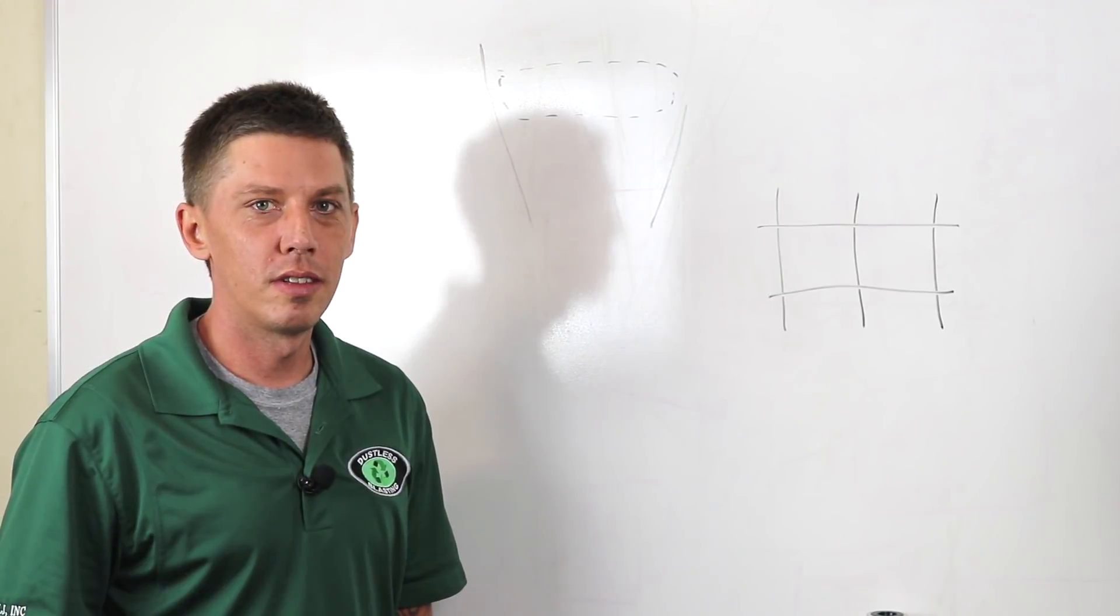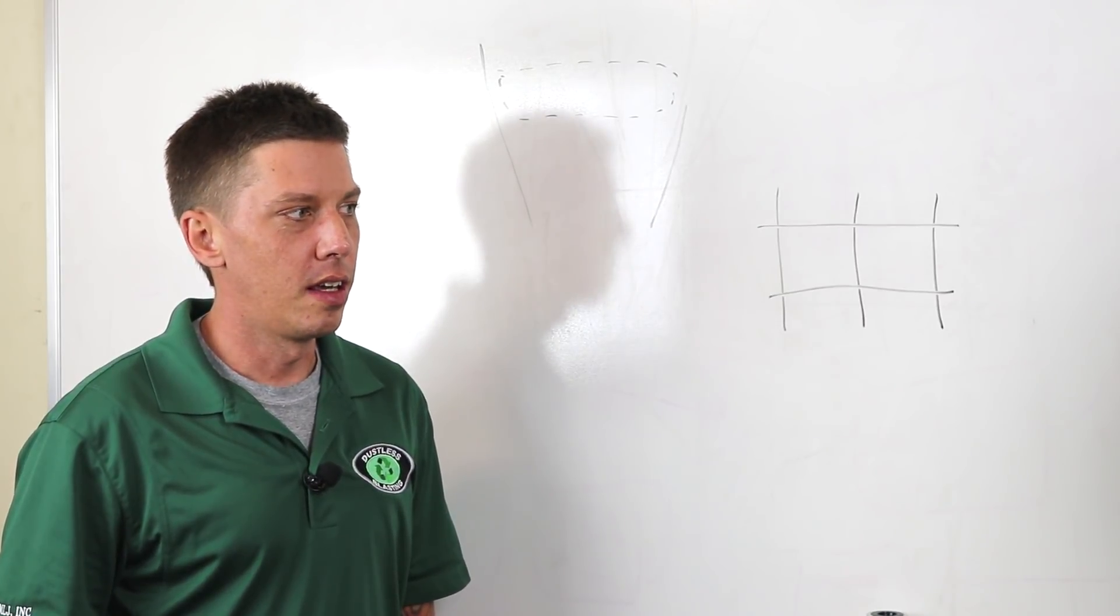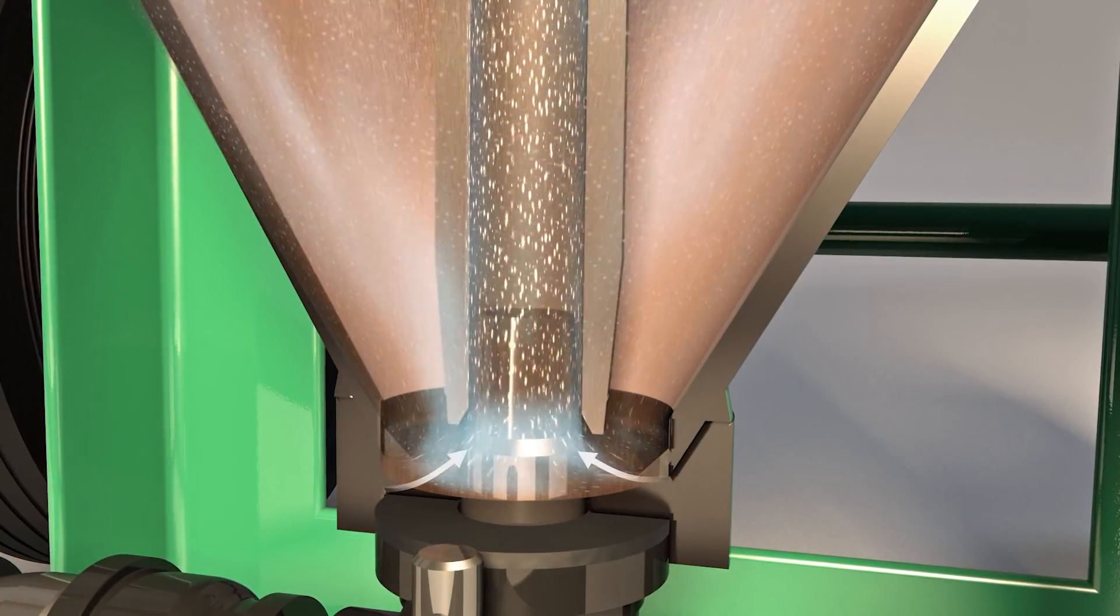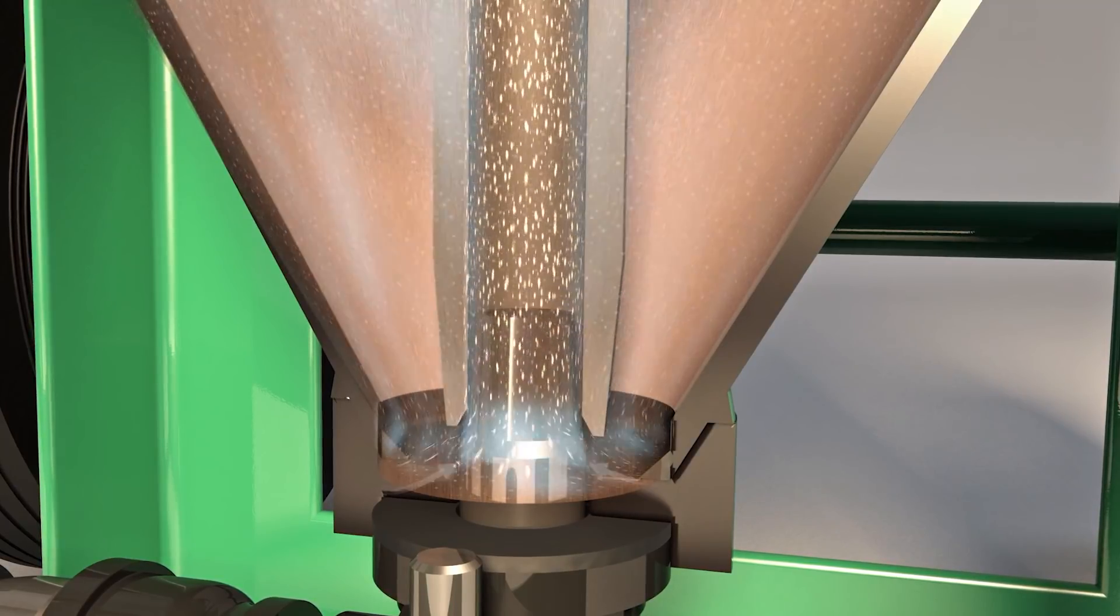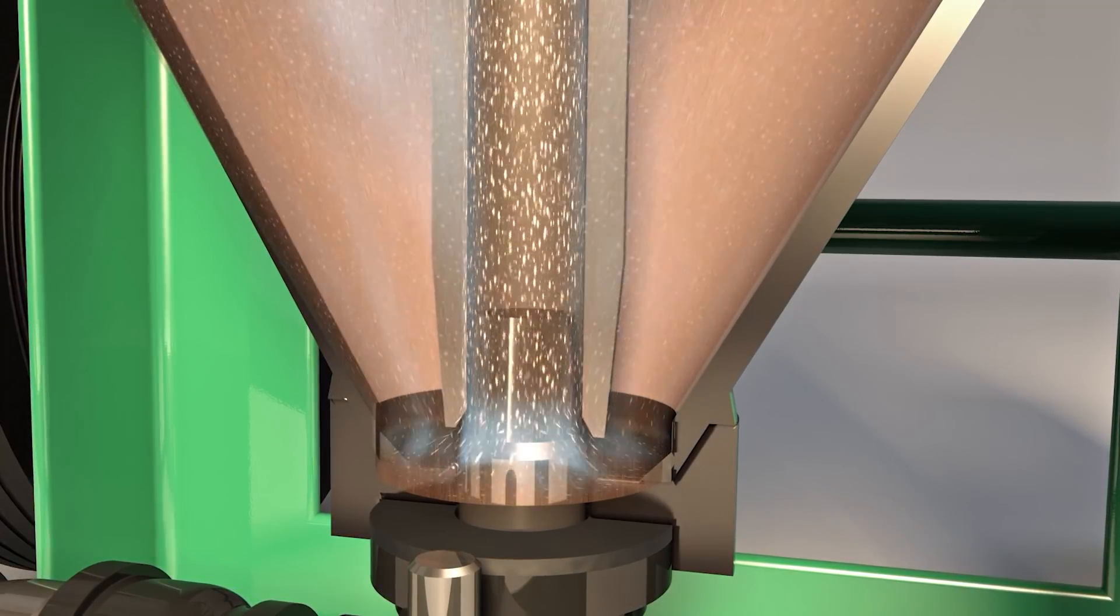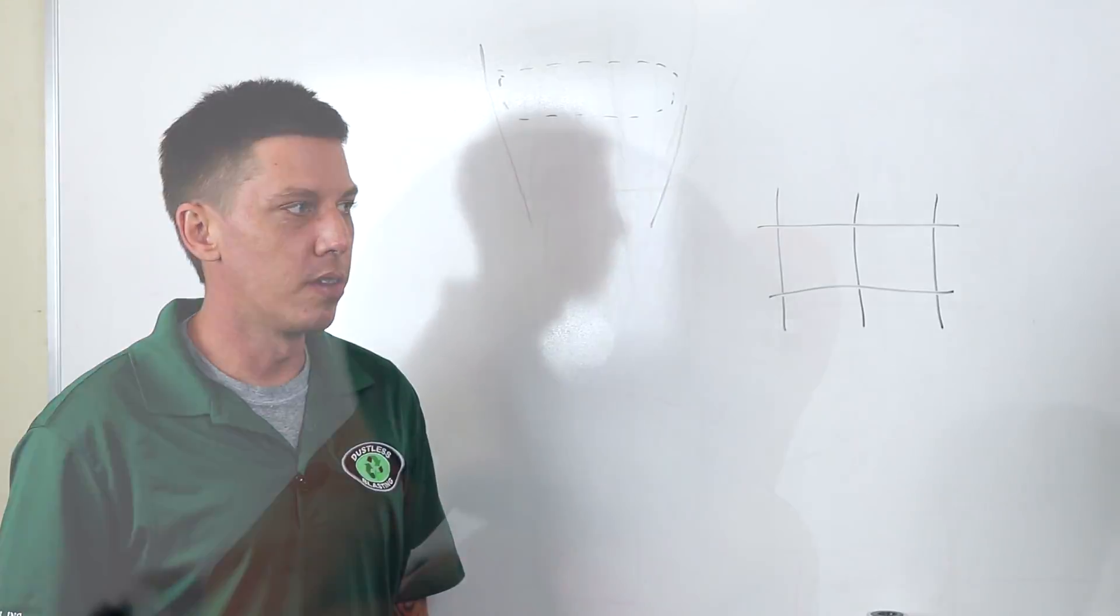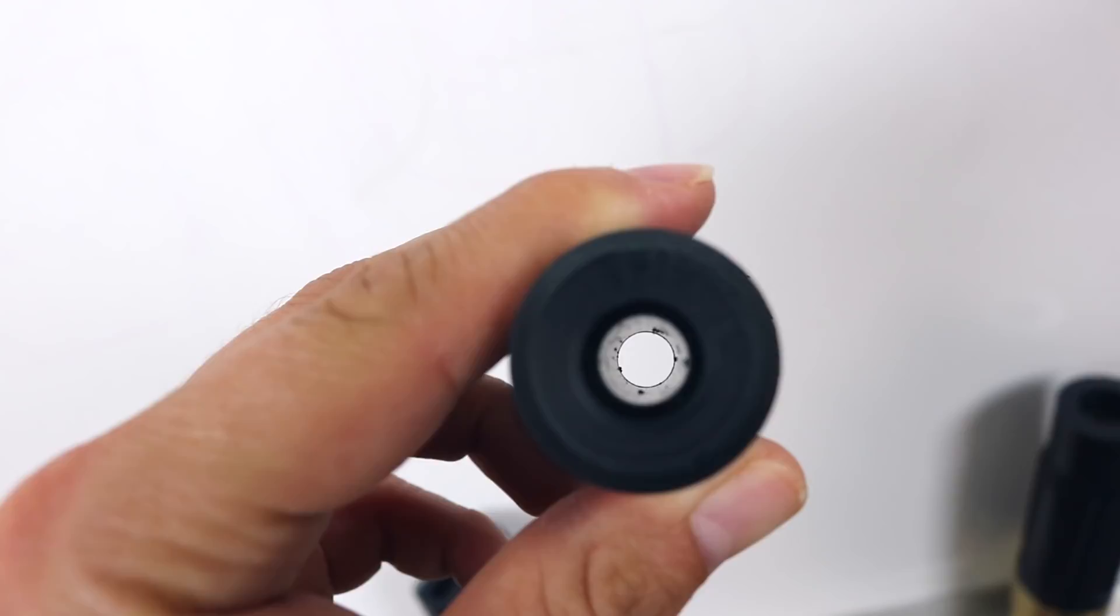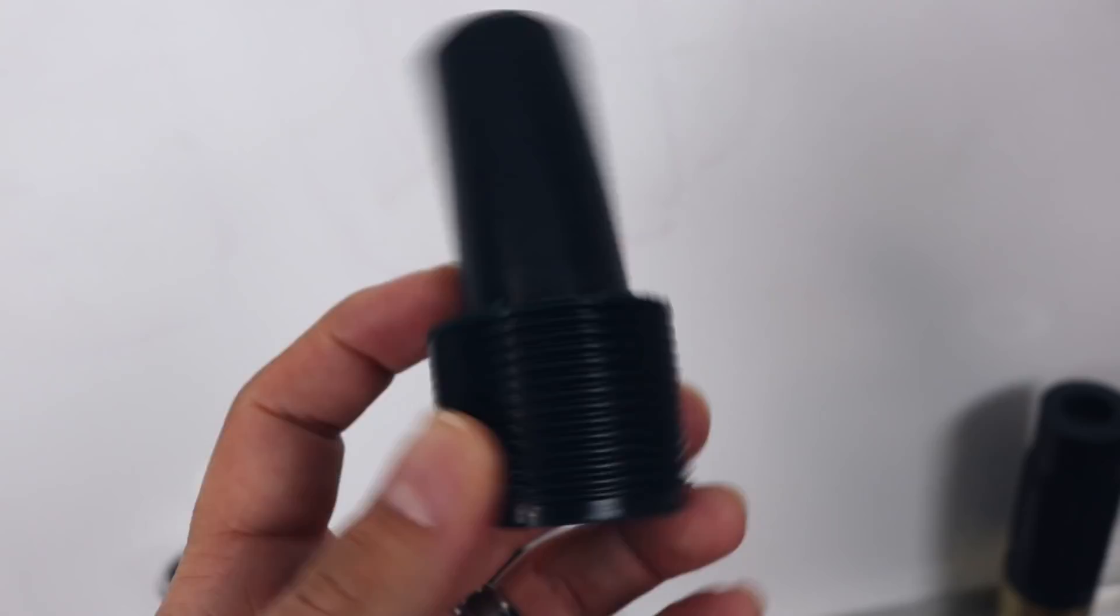The DB500's with that 185 compressor, the smallest you want to go is a number five nozzle, and that's just because the way the pots work, they create suction in the bottom of the cone. If you put a number four, number three nozzle, it's just not going to work right. You're not going to run enough volume over that inlet nozzle to create the suction to pull the abrasive out. So you want to make sure you don't get too small of a nozzle. And if you're looking for a smaller blast pattern, that's when you would switch to an ST nozzle as opposed to trying to get a number three or number four.